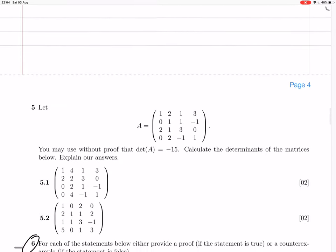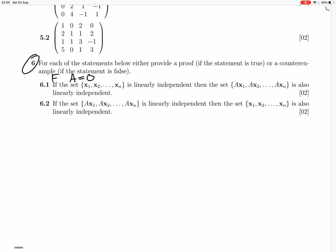6.2 probably is true. Let's just try and prove it's true. If that set is linearly independent, then that set is also linearly independent. It's like the other way around. Okay, so we take a₁ times Ax₁ plus all the way to aₙ times Axₙ.